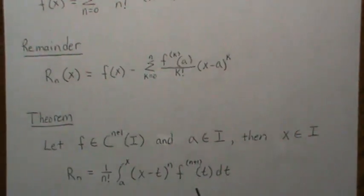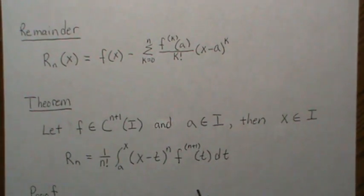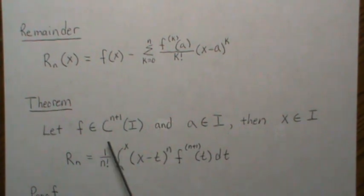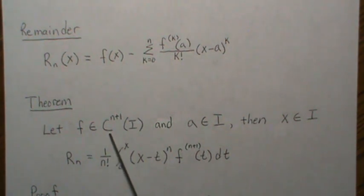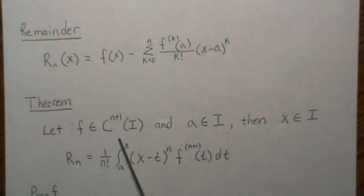But let's look at the integral form of the remainder. So let's let f be in this. So what this says, it's n plus 1 differentiable, and that function is continuous, is what that means. And also it applies to lower. So if 2 is less than n plus 1, then it's differentiable twice, and that differentiable function is continuous. That's this notation.